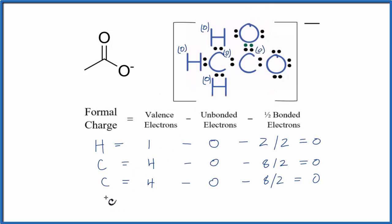Next, let's do the oxygen with the double bond. Oxygen, group 16, sometimes called 6A, six valence electrons. Unbonded, two, four. Then we subtract the electrons in the chemical bond here. This is a double bond. We have two, four. Divide that by two. That equals zero as well.